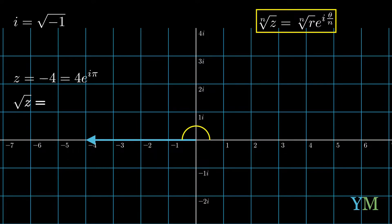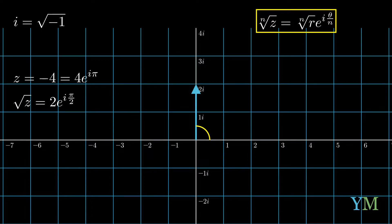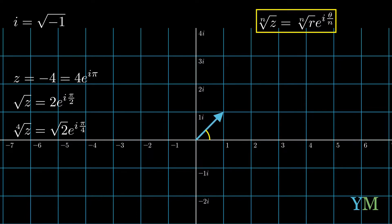If we want to calculate the square root of this number, we immediately receive an angle that is exactly half of it: pi over 2. And the distance would be the square root of 4. Meaning our number would be 2 times e to the i pi over 2 — a 90 degree angle with a length of 2. We receive exactly the number 2i. For the fourth root of z, we get the fourth root of 4, which is the square root of 2, and the angle pi divided by 4. That fourth root converts to the algebraic presentation 1 plus i, but we don't have to convert it.